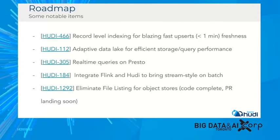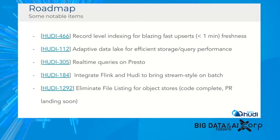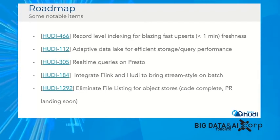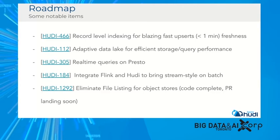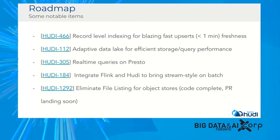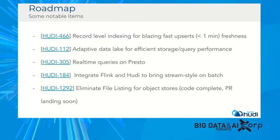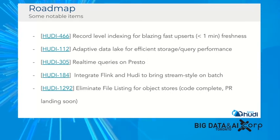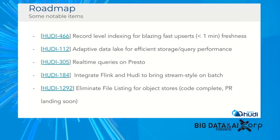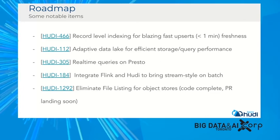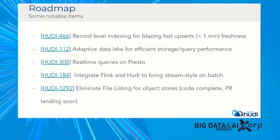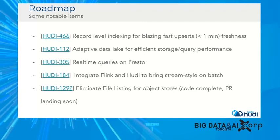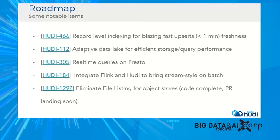On the roadmap, there are some very interesting projects coming up. The Adaptive Data Lake — Hudi RFC-12 — targets efficient storage and query performance by learning from query patterns. Hudi currently works on Spark, but we're working toward making it engine-agnostic, at which point Hudi will be able to run on Flink for stream-style processing on batch. We're also working on eliminating file listing for object stores — that feature is code complete and the PR is landing soon.